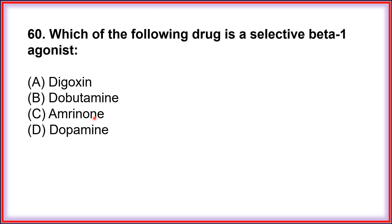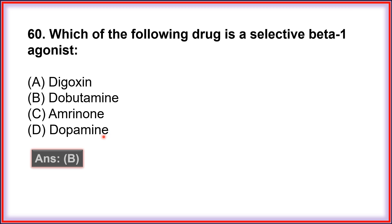Question number 60: Which of the following drug is a selective beta-1 agonist? A. Digoxin, B. Dobutamine, C. Amrinone, D. Dopamine. The correct answer is B. Dobutamine, which is a cardioselective beta-1 agonist.